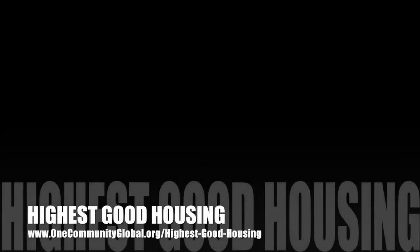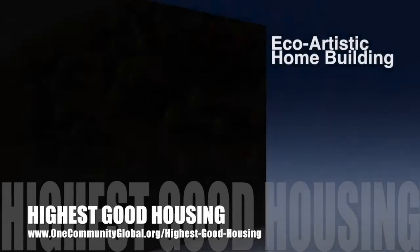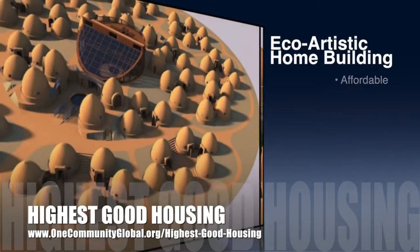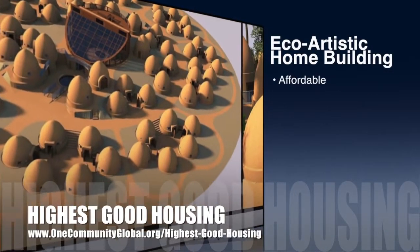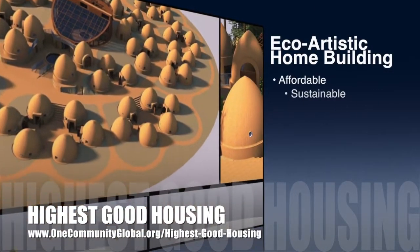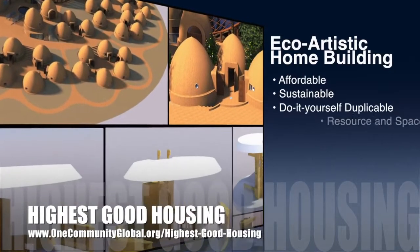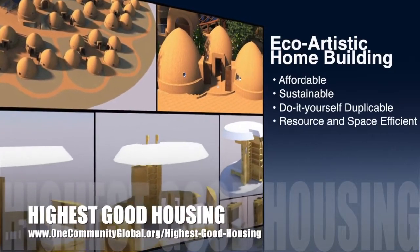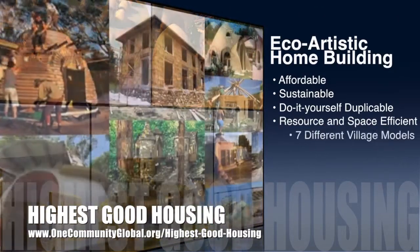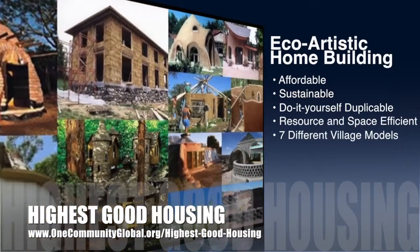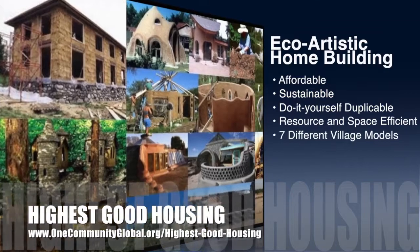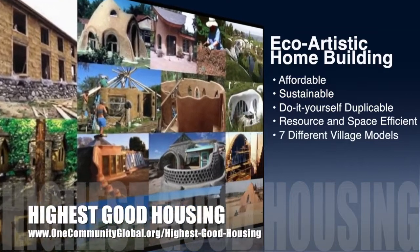The One Community approach to Highest Good Housing is eco-artistic home building that is affordable, sustainable, do-it-yourself duplicable, resource and space efficient, and consists of seven different sustainably constructed village models.